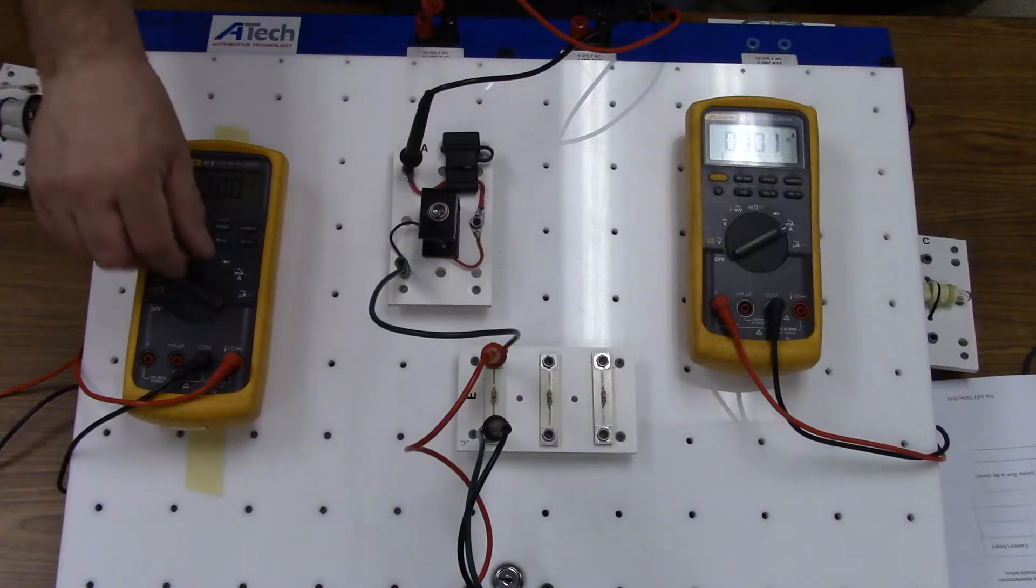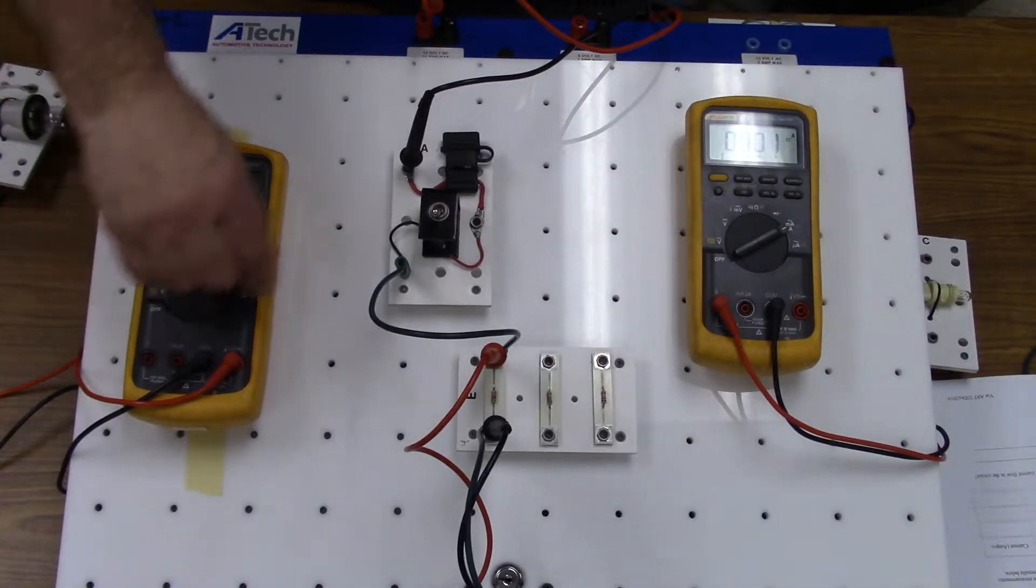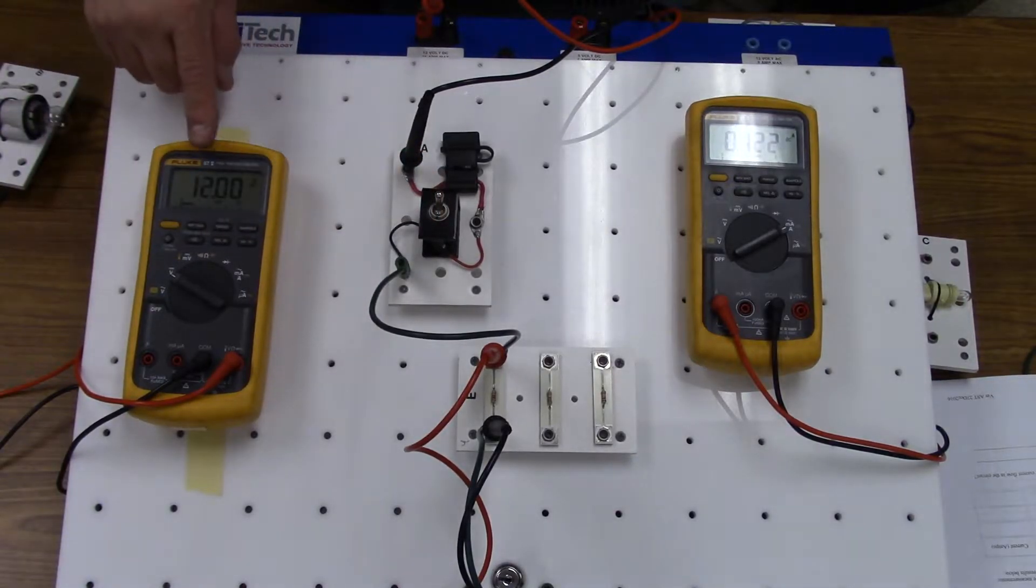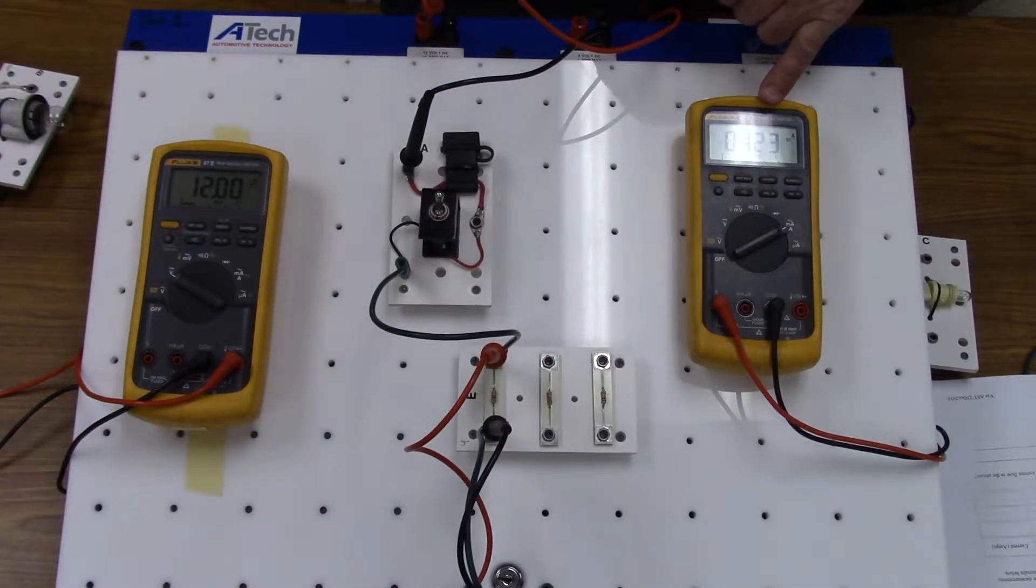So we'll start out, we'll measure the resistance of R1, 99.8, so 100 ohms. Turn the circuit on, we've got 12 volts applied to 100 ohms, we've got 123 milliamps.